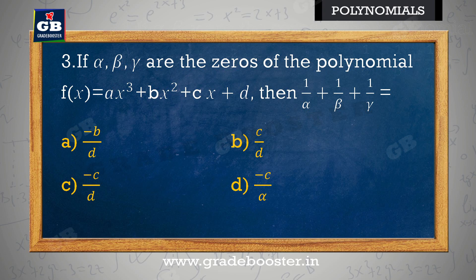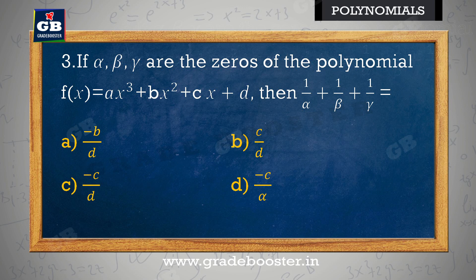If alpha, beta, gamma are the zeros of the polynomial f(x), then 1/alpha + 1/beta + 1/gamma is equal to — alpha, beta, gamma polynomial f(x) ke zeros hain, tab 1/alpha + 1/beta + 1/gamma is equal to [answer choices follow].